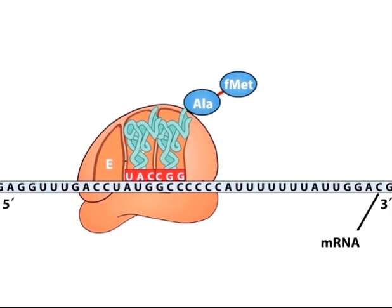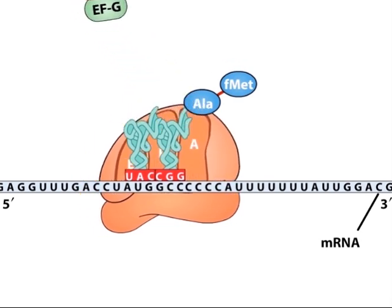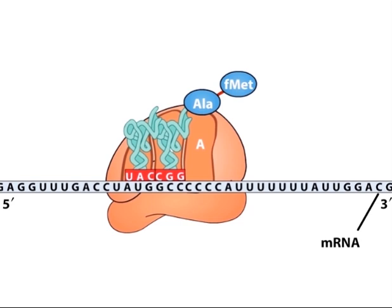The next step in elongation is translocation, which requires another elongation factor called EF-G and is again coupled to GTP hydrolysis. During translocation, the ribosome moves three nucleotides along the mRNA, positioning the next codon in an empty A site.